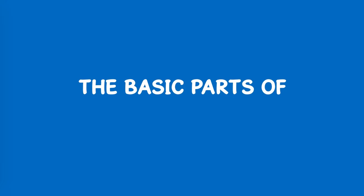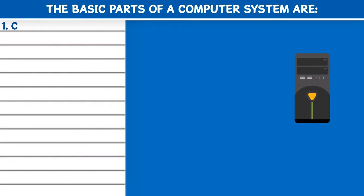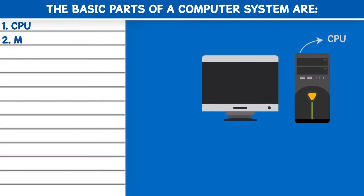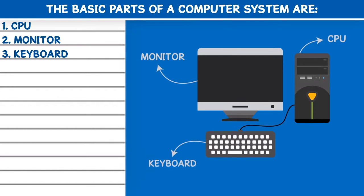The basic parts of a computer system are: 1. CPU, 2. Monitor, 3. Keyboard, 4. Mouse.